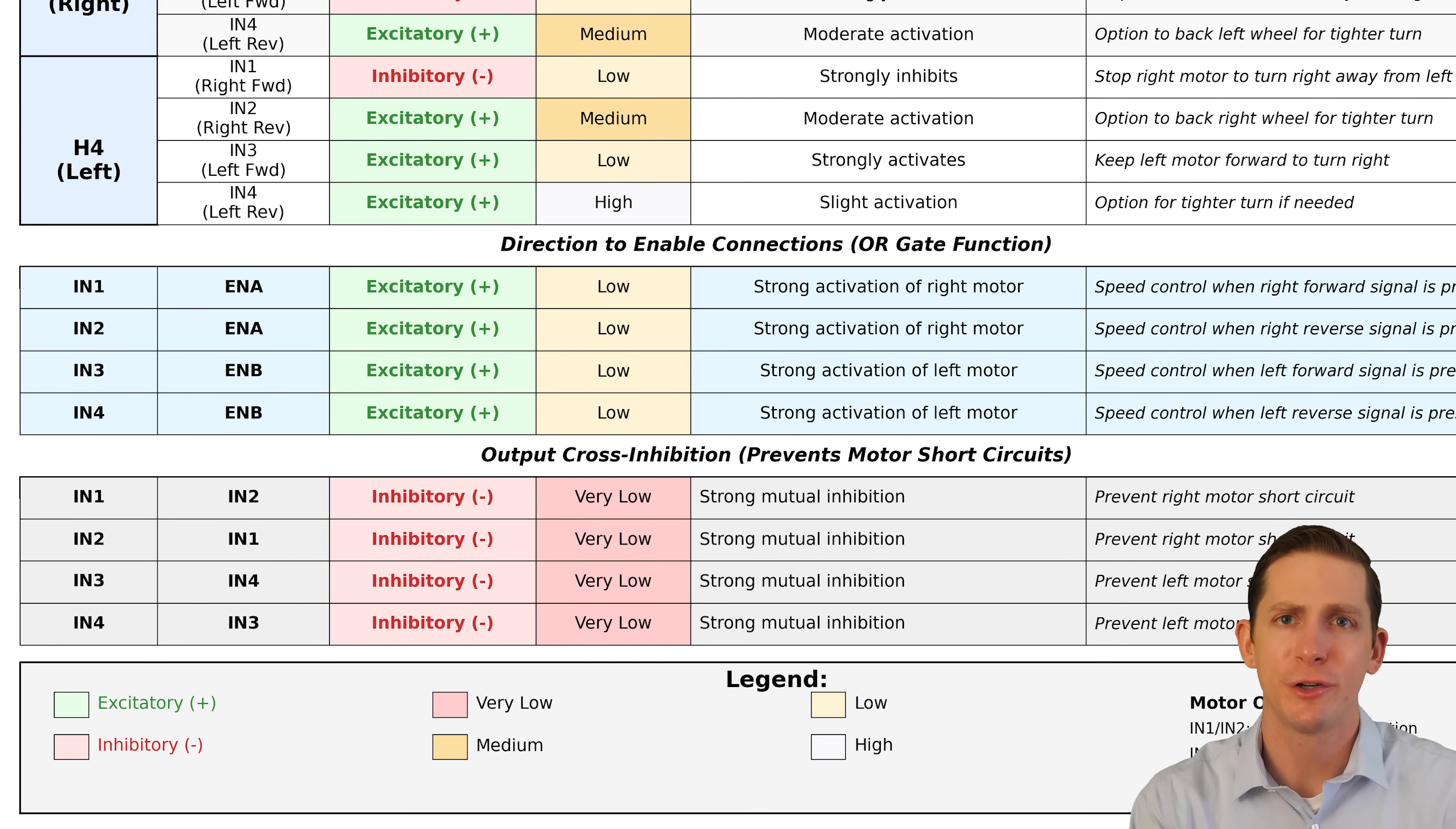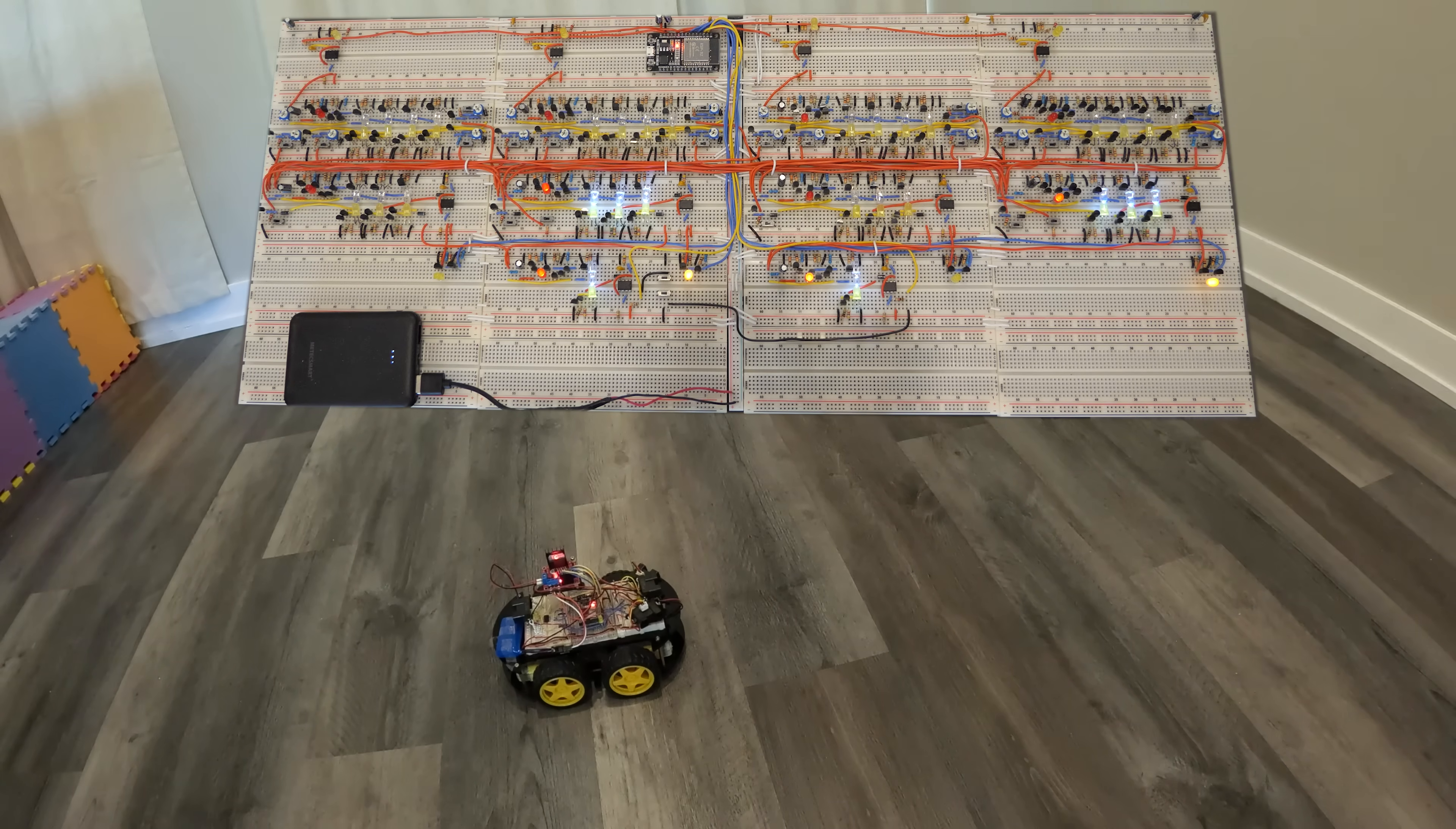The firing rate of the motor direction layer is basically passed into the variable speed layer. There are also inhibitory connections within the motor direction layer to ensure only one direction command is sent. Now I will show what this logic looks like in the actual network. Now let's test the control.